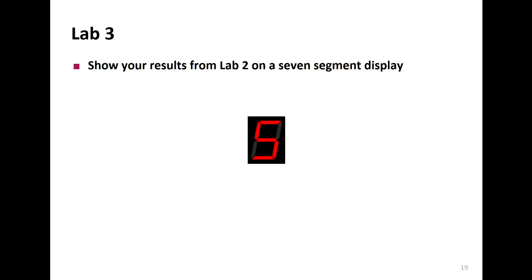In lab three, we want you to map the computation result to a seven-segment display. If the result is eight, show eight; if it's 12, show C; if it's 16, show F. As an optional challenge, you can also convert hexadecimal representations to decimal. This shows you that beyond LEDs, there's much more on the FPGA board to explore.